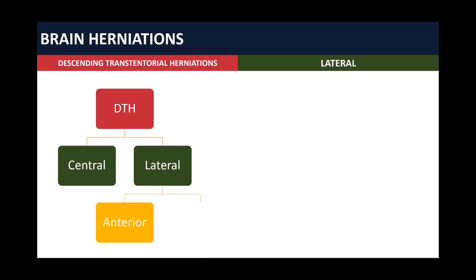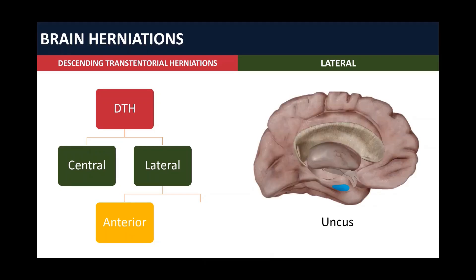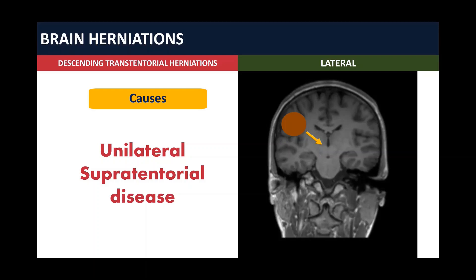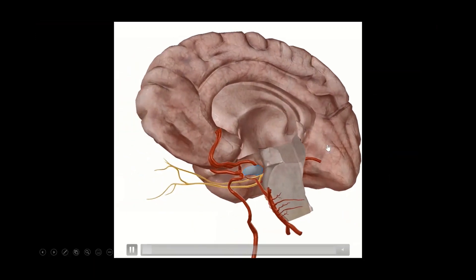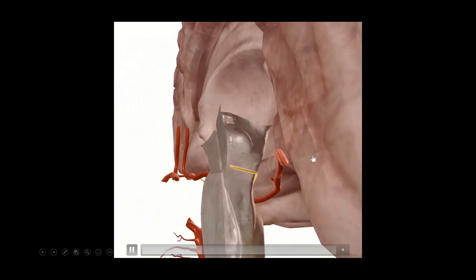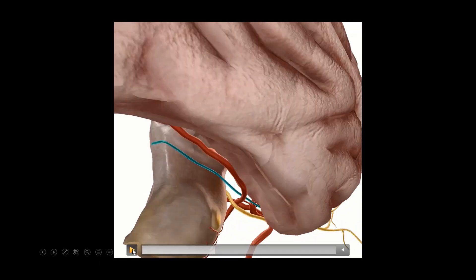Now we are going to talk about lateral DTH and more specifically the anterior type. The uncus represents the anterior lateral DTH, and the parahippocampal gyrus is responsible for the posterior one. The cause of lateral DTH is unilateral supratentorial disease. The uncus, highlighted in blue, can compress and herniate through the third cranial nerve, which arises from the anterior part of the pons. The parahippocampal gyrus is too posterior, so it will not directly compress the third cranial nerve.